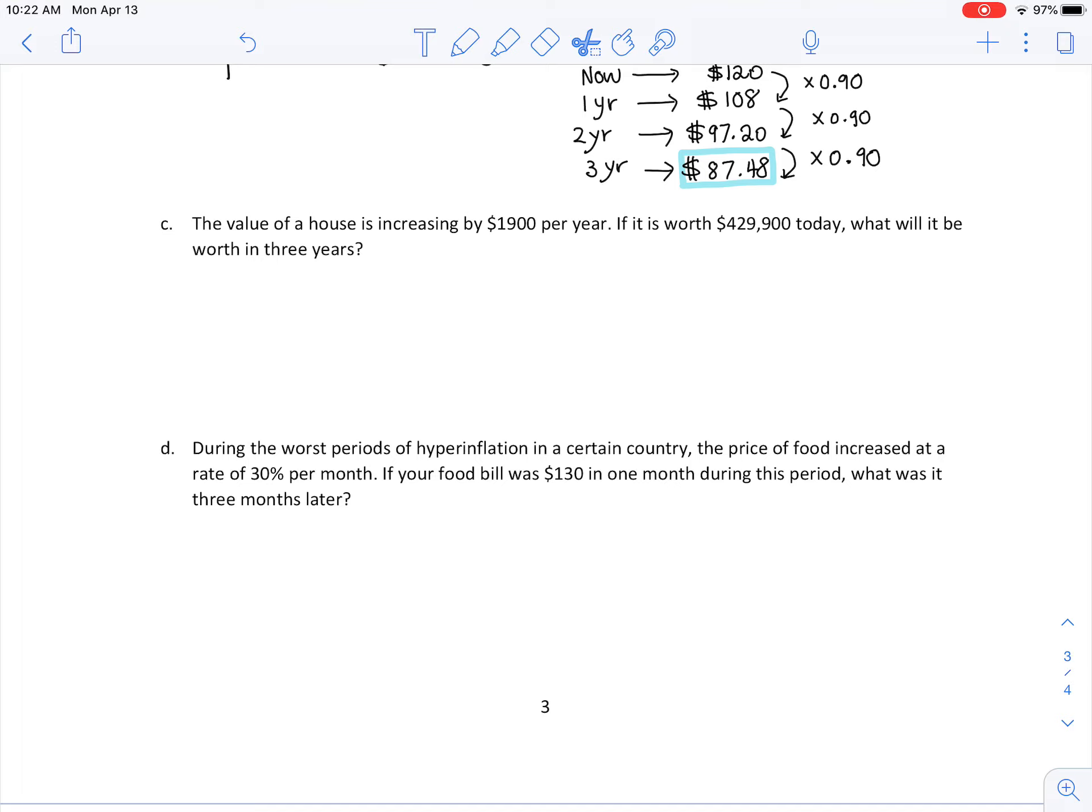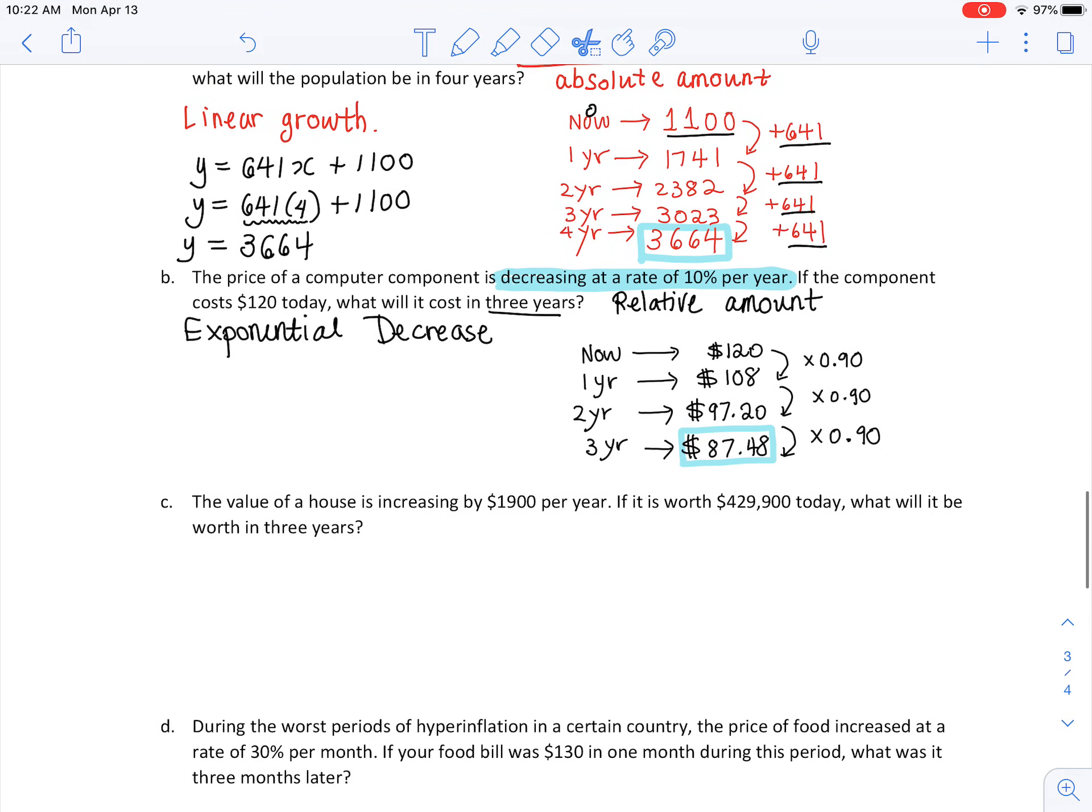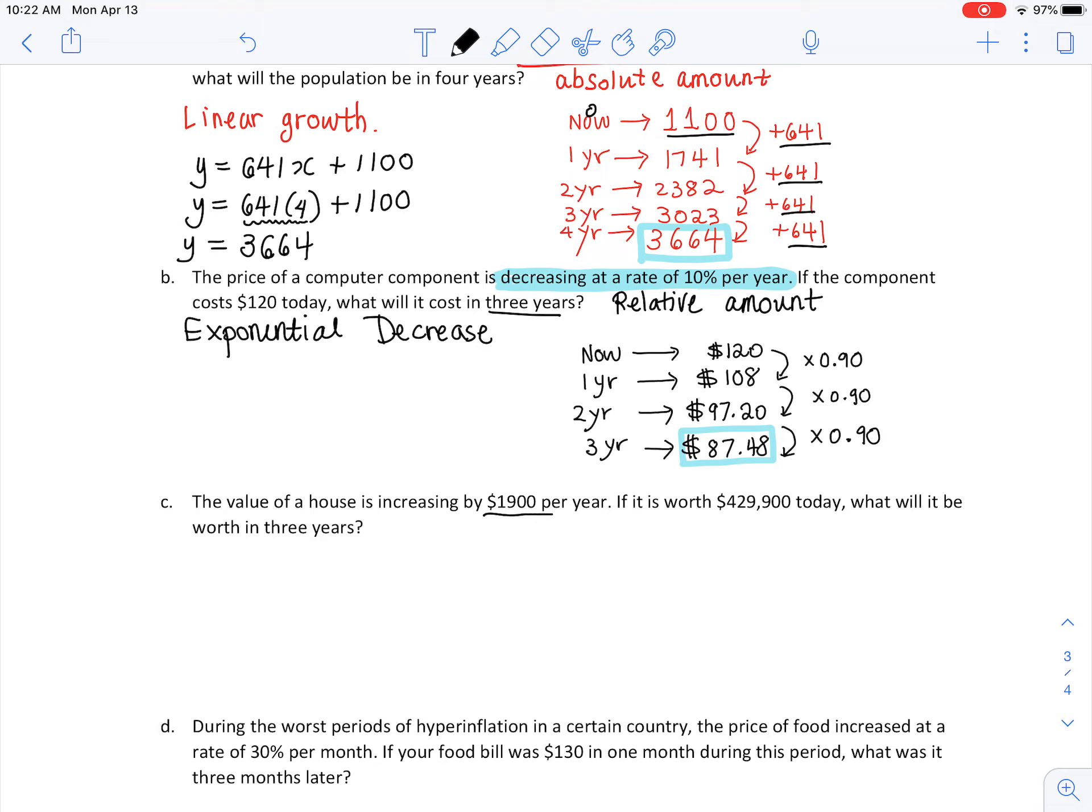The very last part: the value of a house is increasing by $1,900 per year. This year it's going to go up that much, next year it's going to go up that same amount. This is an absolute amount. If it's going up by an absolute amount, we know this is linear, and because they said increasing, this is going to be linear growth or linear increase.